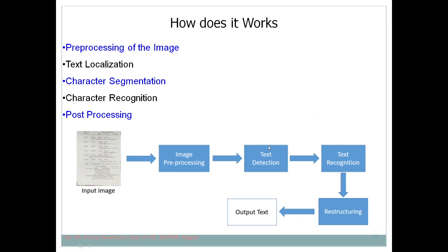After image processing comes text detection — the process of localizing where the text is present in the image. After localization, text recognition determines exactly what is written. This is then followed by restructuring and providing the output. The full process involves pre-processing, text localization, segmentation, recognition, and post-processing to improve accuracy. OCR mainly involves two important phases: text detection and text recognition.